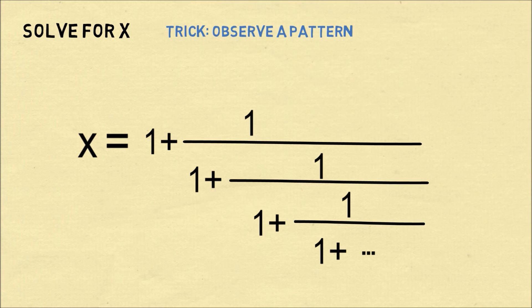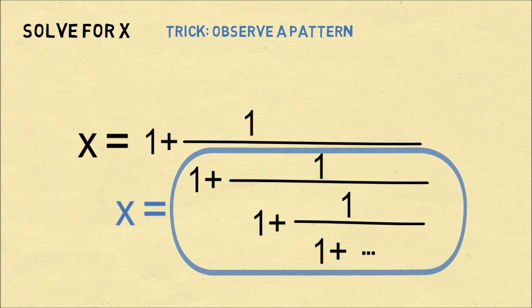The trick is to observe a pattern. If you circle the terms that are under the denominator, 1 plus 1 over 1 plus etc., this exactly is equal to the variable x.